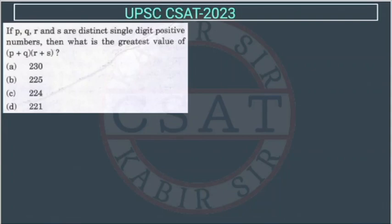Now, in this question, if P, Q, R and S are distinct single digit positive numbers, then what is the greatest value of (P + Q)(R + S)?